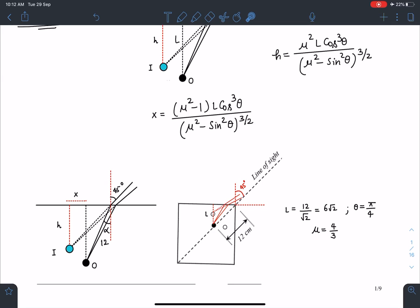So l will become in that case 6√2. That is 12√2. Here we have to find this height. Alright. θ becomes 45 degrees and μ becomes 4/3 here.